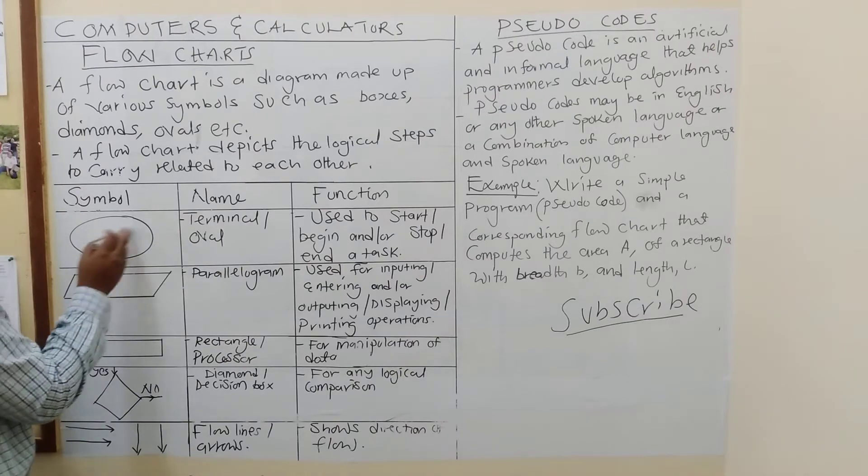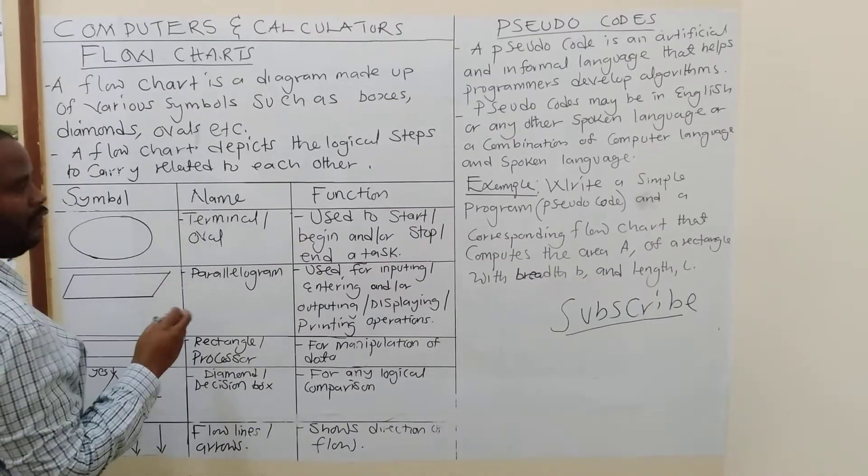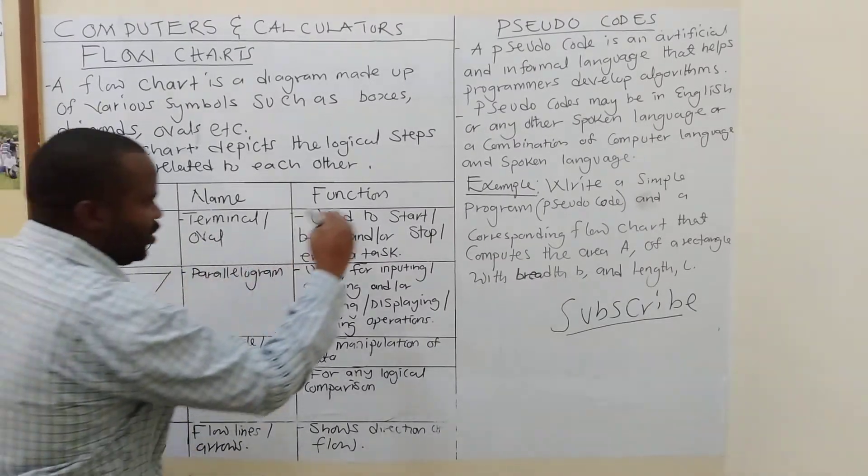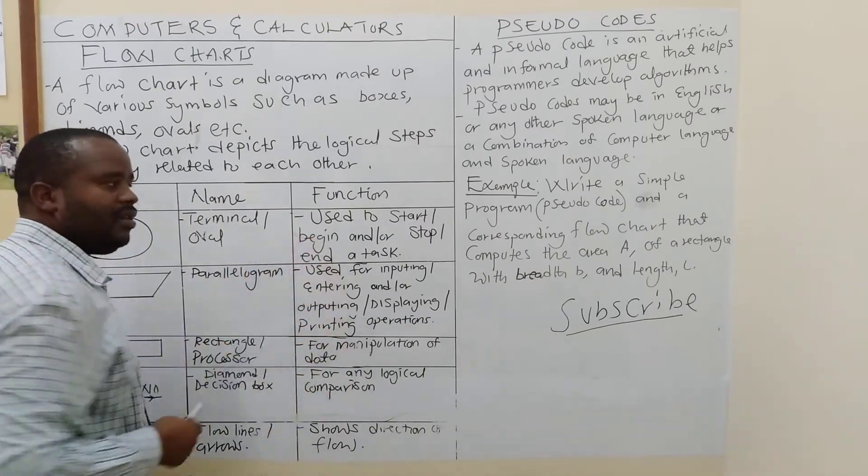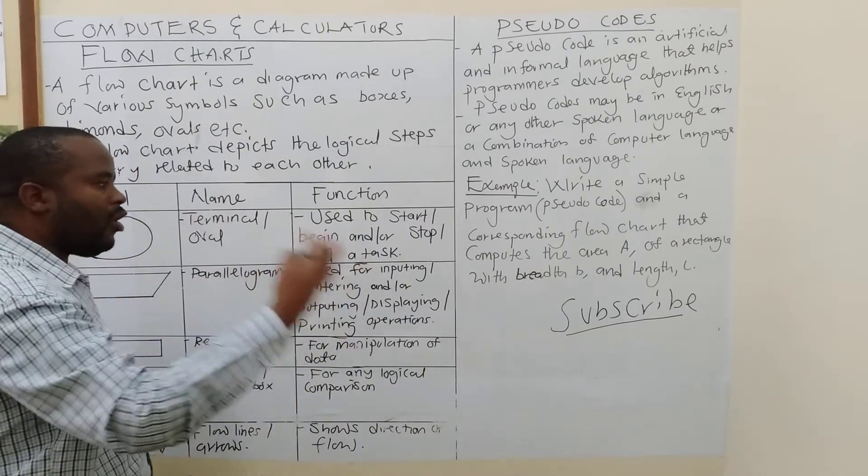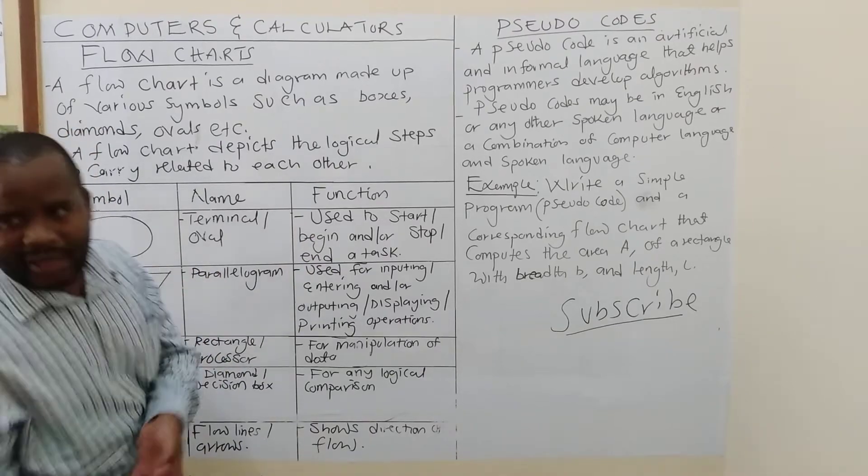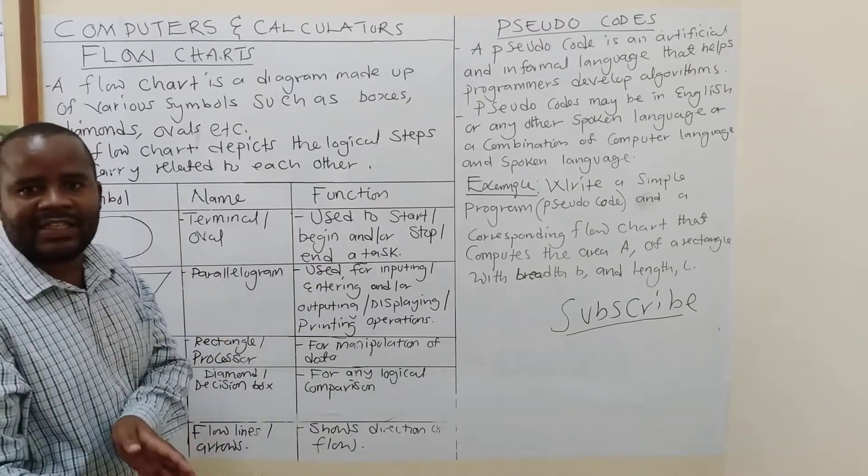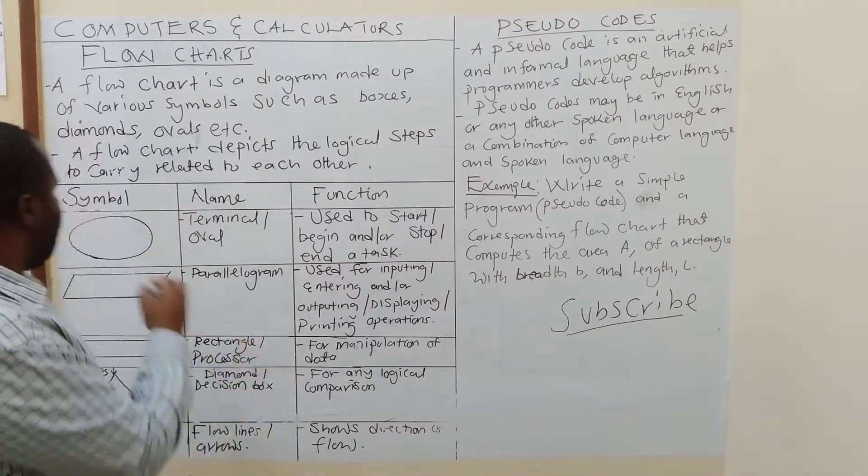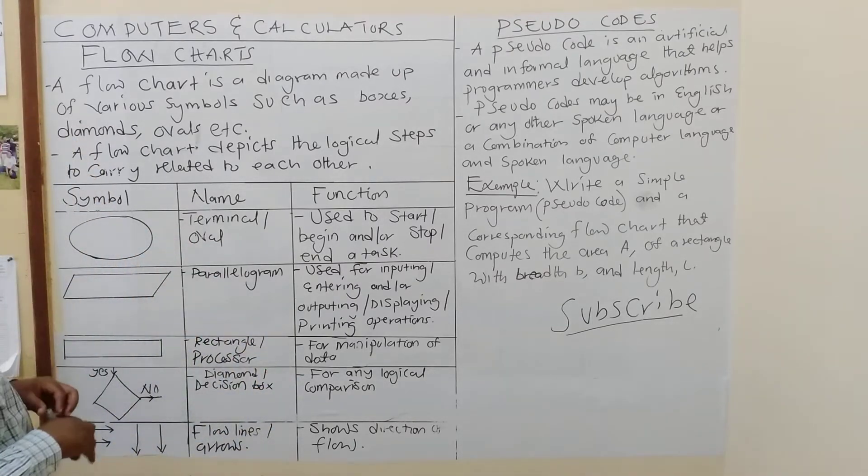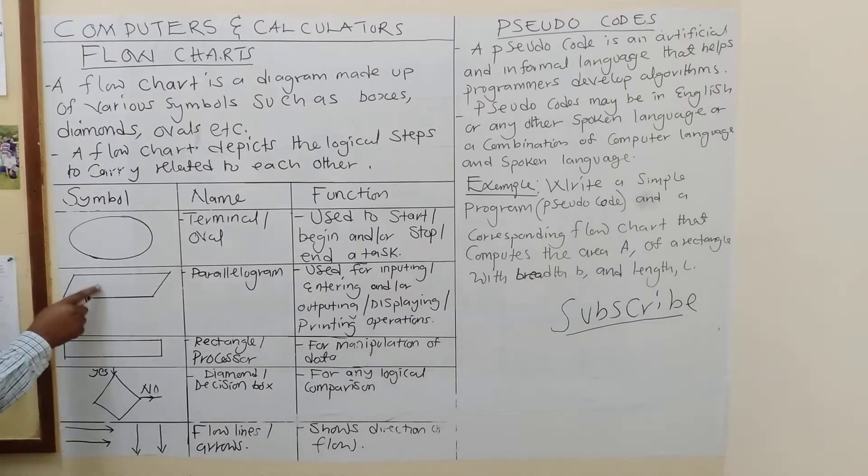In other words, a flowchart shows how each step is related to the other. Now, in order for us to understand how we can accomplish this thing fully, we need to know or understand what we call flowchart symbols. These are some of the flowchart symbols that you need to appreciate. The first one is what we are calling an oval. This oval is used to start or begin and or to stop or end a program.